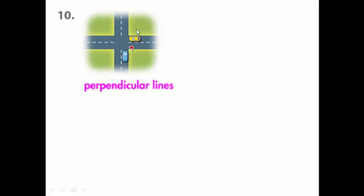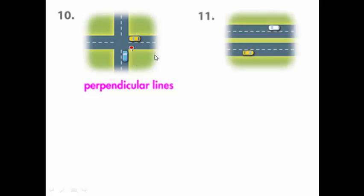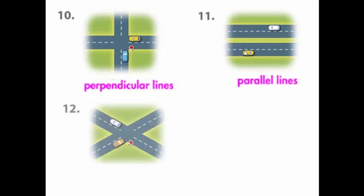You have four right angles. What is the relation between these two rows? Remember — when the lines never meet, you have parallel lines. The last question: what is the relation between these two lines? They are intersecting here at this point with no right angles.